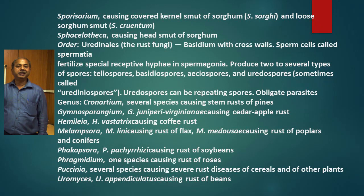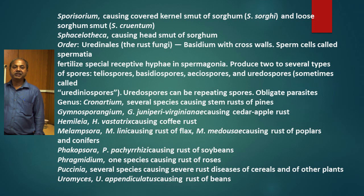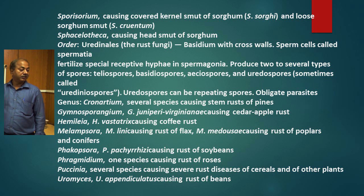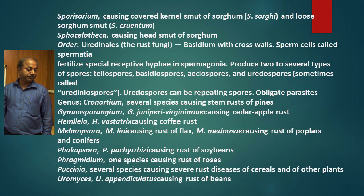In order Uredinales, it is basically the rust fungi. In rust, the genera are Puccinia, then Uromyces, then Melampsora. Stem rust of wheat, orange rust of wheat, and brown rust of wheat are all caused by Puccinia graminis, Puccinia recondita, and Puccinia striiformis. Uromyces fabae causes rust of lentil and rust of faba bean. Melampsora lini causes rust of linseed, then Phakopsora causes soybean rust, and Phragmidium causes rust of roses.